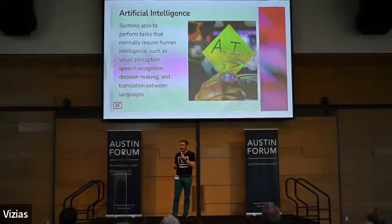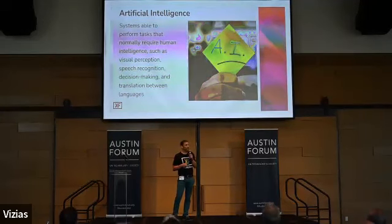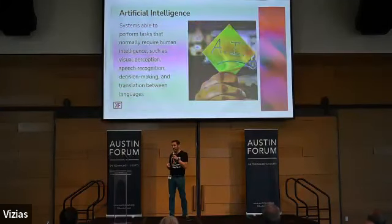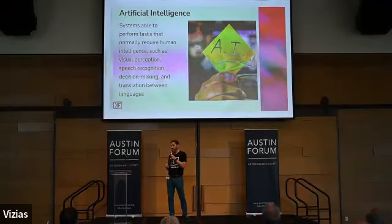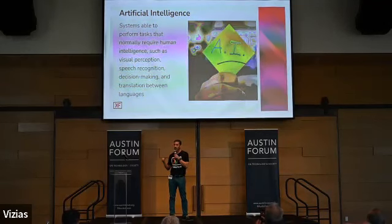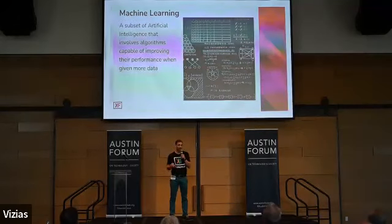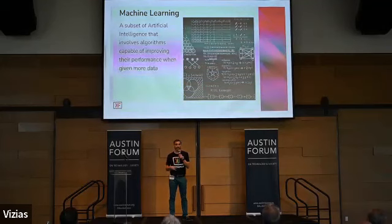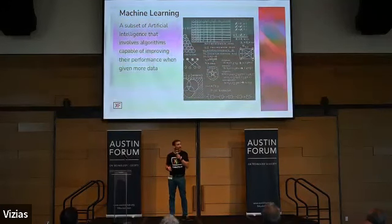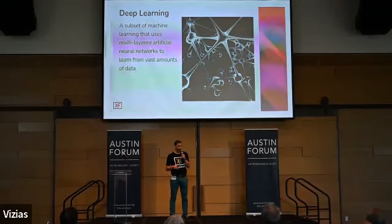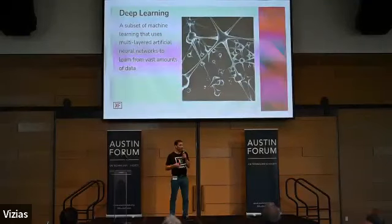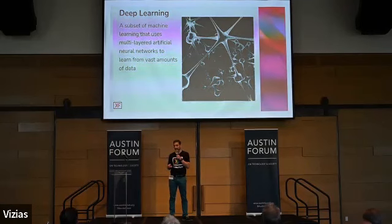Starting with some terminology: artificial intelligence is basically the idea of building systems that can perform tasks that humans normally do. You may have heard of AGI — artificial general intelligence — which does not exist right now, so all AI systems we'll talk about tonight are what we'd call narrow AI. Machine learning is a subset of AI where systems and algorithms perform better over time given data. Deep learning is a subset of machine learning using artificial neural networks with multiple layers trained on typically very large amounts of data.